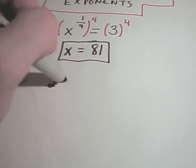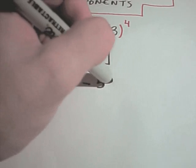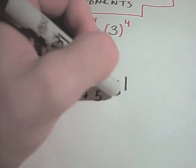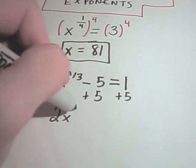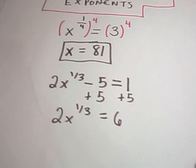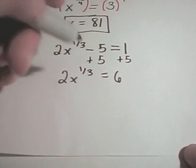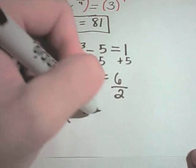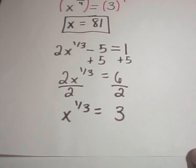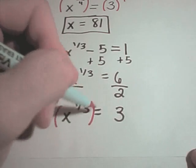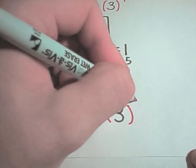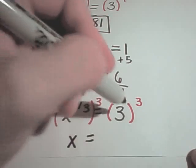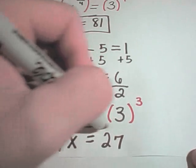Suppose we have 2x to the 1/3rd minus 5 equals 1. I'm going to use the same idea on this one. The first thing I'll do is add 5 to both sides to get 2x to the 1/3rd equals 6. The next thing I'm going to do is divide both sides by 2, giving me x to the 1/3rd equals 3. To get rid of the 1/3rd power, I'm going to cube both sides. 1/3 times 3 gives x to the 1st, and 3 cubed is 27 as our solution.